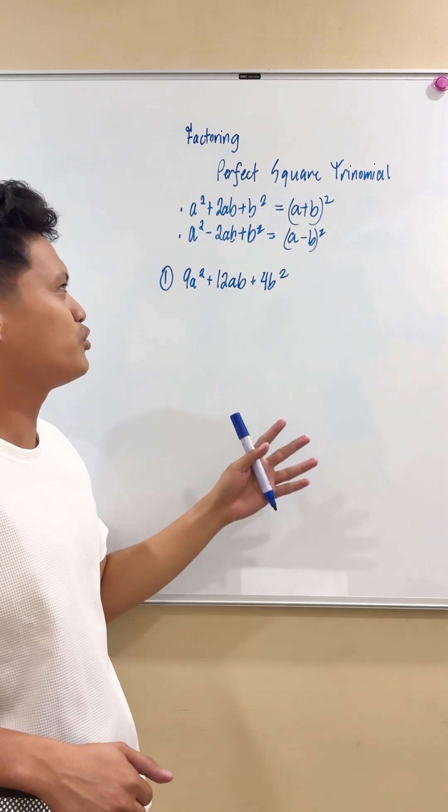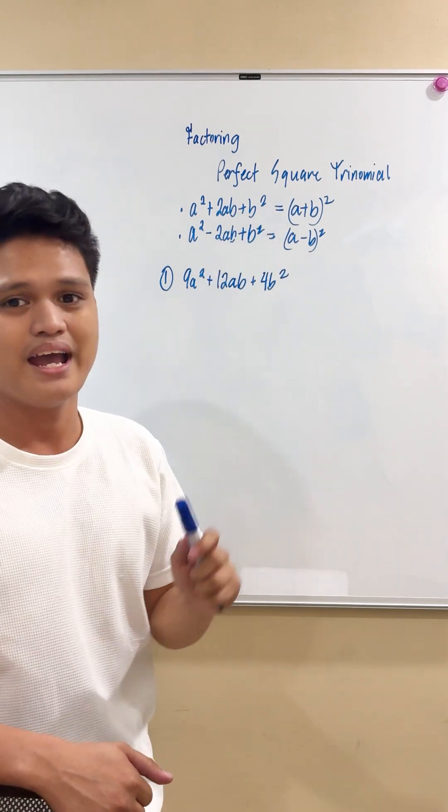So we have a squared plus 2ab plus b squared. And with this, we can factor it out as a plus b squared.